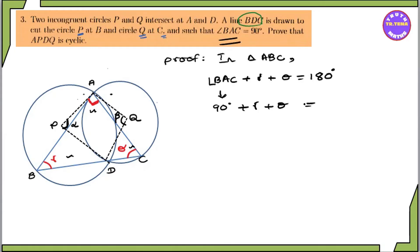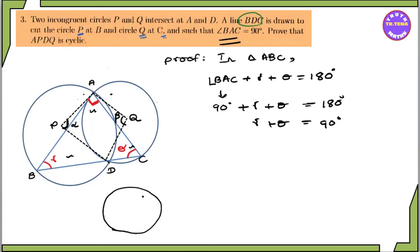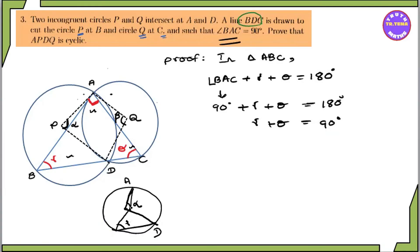Gamma plus theta is equal to 180 degrees. 90 is equal to theta. That's right. Now we have theta equal to 90. The 90 degrees means alpha is equal to the angle. So eta is equal to alpha, and gamma plus alpha does not affect the other angles.